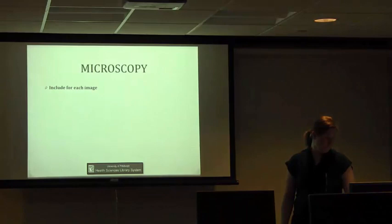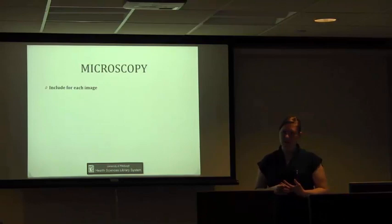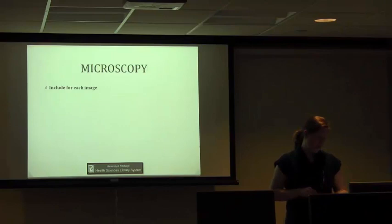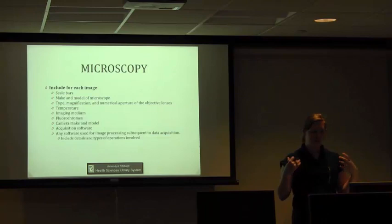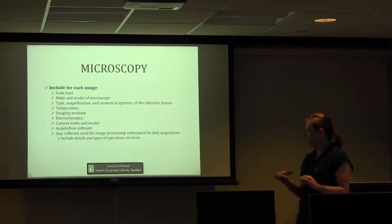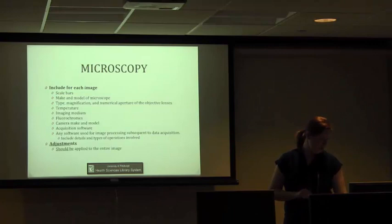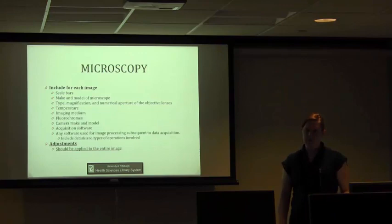The second part, or the third part, is actually looking at microscopy. This is another big area of offense for publishing data. And as I did with the blots, I'll just list for you the things that a lot of the journals want you to include, including scale bars, the make and model of the microscope temperature, imaging medium, fluorochromes. I think all these things will actually affect your data. So they want them listed. And any software used for processing the data. And the big thing with microscopy is adjustments, if they're made, should be applied to the entire image. And that's pretty much the be all, end all of microscopy. And if you're not doing that, it is also easy to detect.